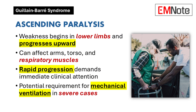Ascending Paralysis: The hallmark of this syndrome is its distinctive ascending paralysis pattern. Clinicians will observe weakness that systematically progresses from lower extremities upward, potentially involving arms and torso. The rapidity of progression demands immediate clinical attention.